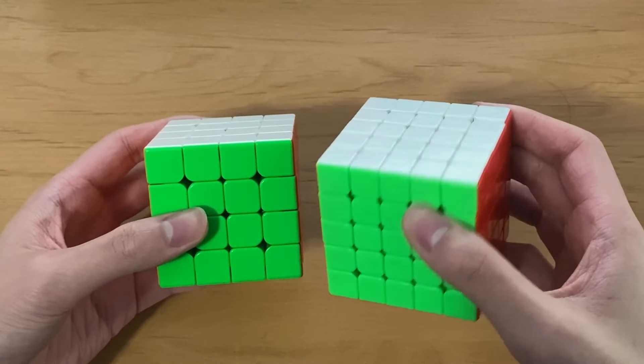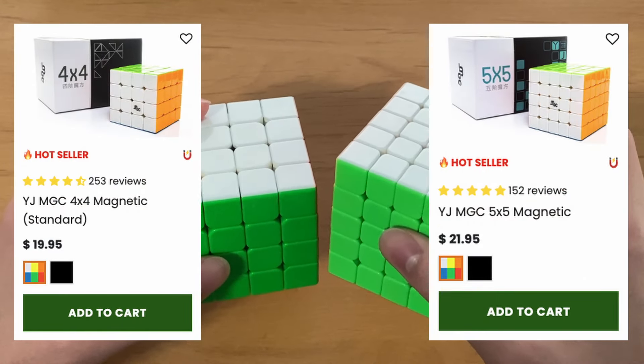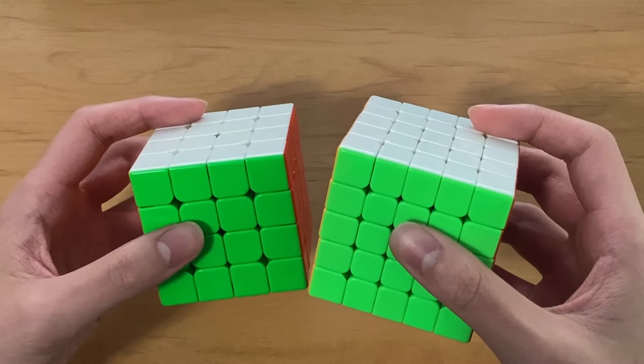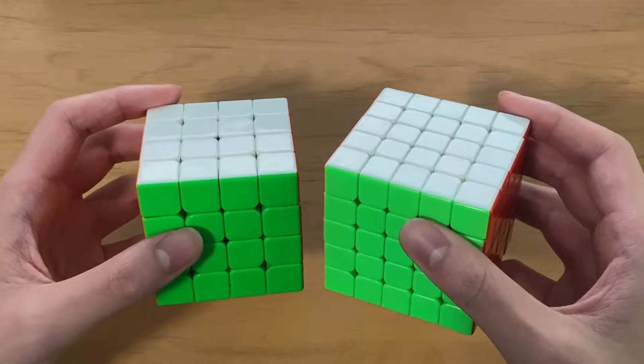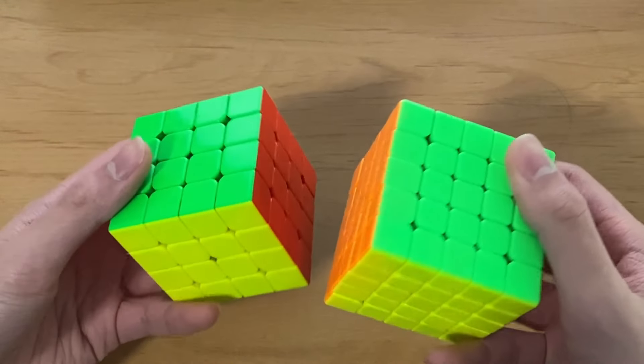For 4x4 blindfolded and 5x5 blindfolded, I just use the MGC4 and the MGC5. I'm not fast enough at Big Blind for the hardware to really matter that much, and these are the only two cubes that I have that don't have logos, so they are legal for blind.